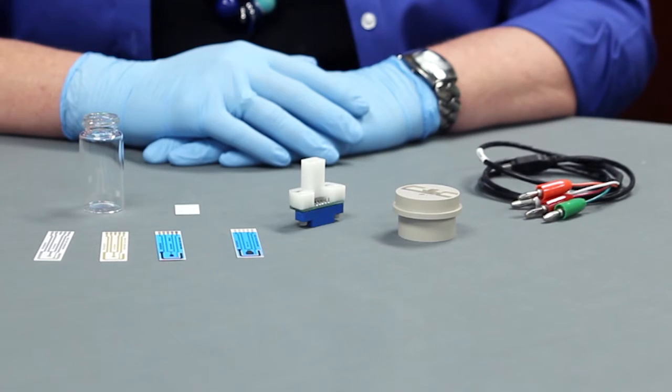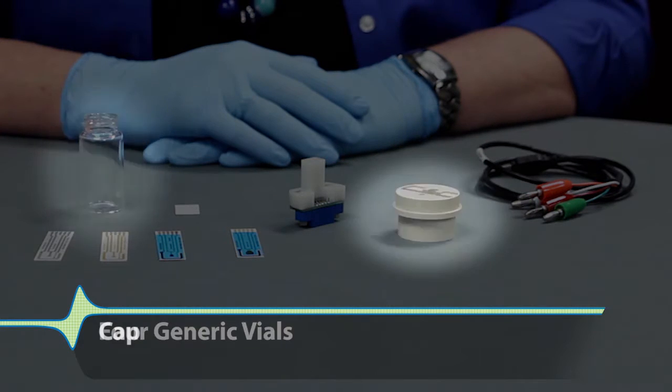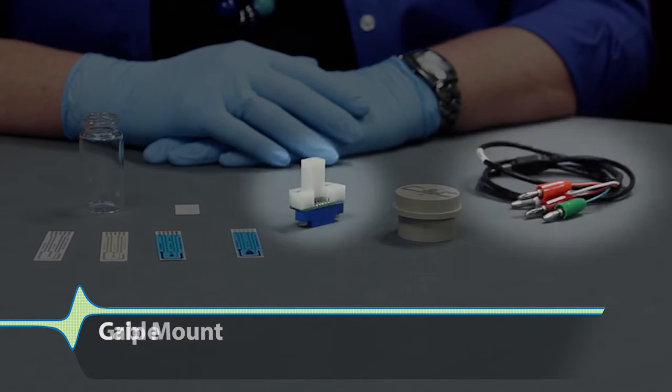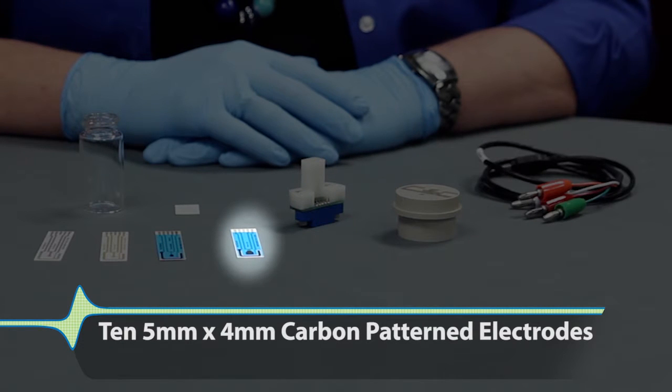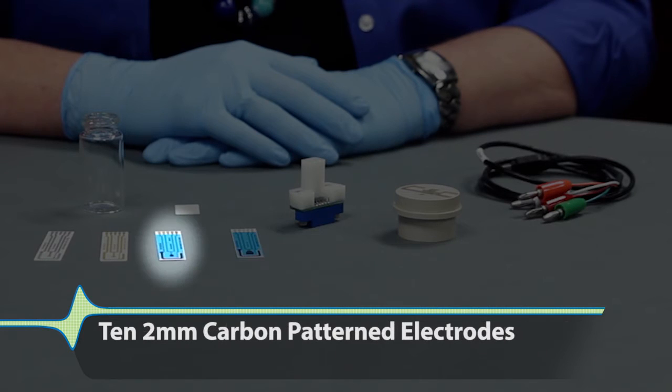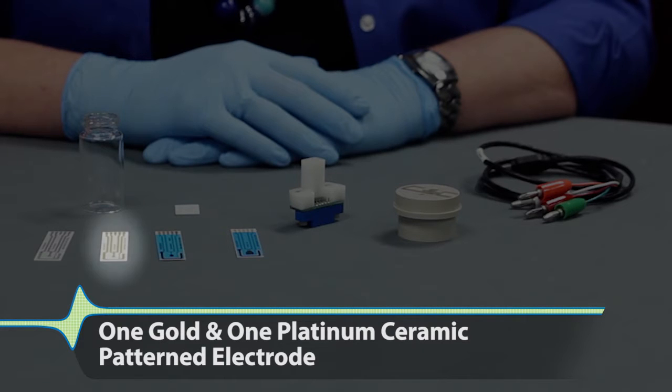This kit includes the following: four generic files, a cap, a grip mount, the cable, ten 5mm x 4mm carbon pattern electrodes, ten 2mm in diameter carbon pattern electrodes, and one each of the gold and the platinum ceramic pattern electrodes.